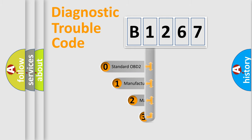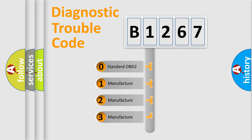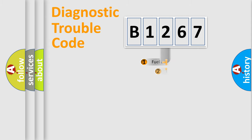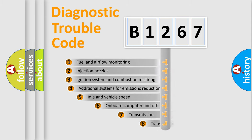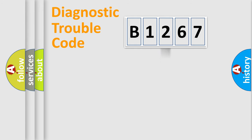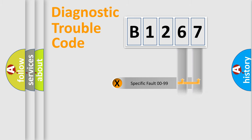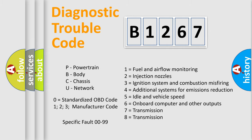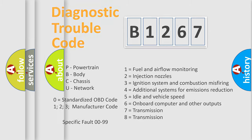This distribution is defined in the first character of the code. If the second character is expressed as zero, it is a standardized error. In the case of numbers 1, 2, or 3, it is a manufacturer-specific error. The third character specifies a subset of errors, and this distribution is valid only for the standardized DTC code. Only the last two characters define the specific fault of the group, and this division is valid only when the second character is zero.